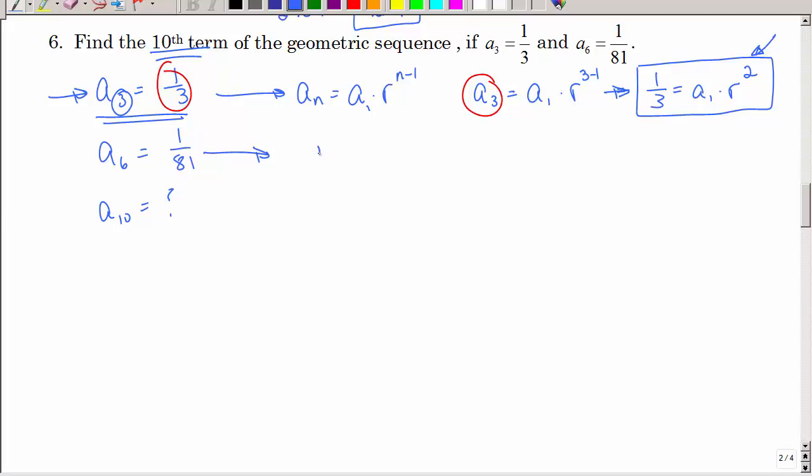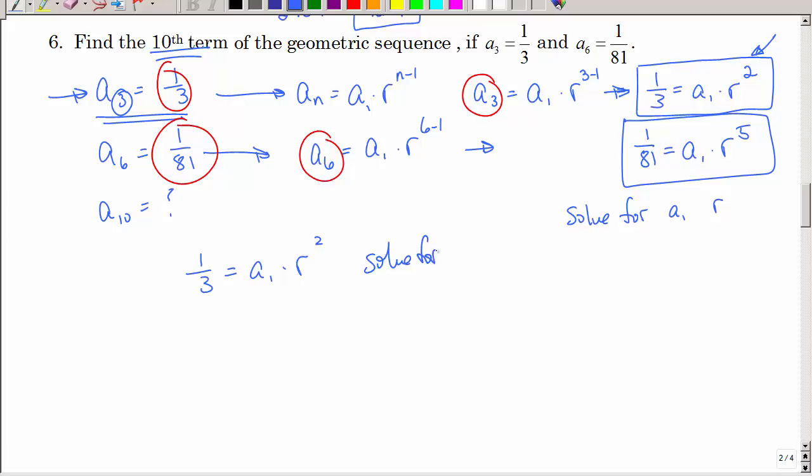Let's do this one. So, I have the sixth term is a1 times r to the sixth minus 1. But again, the sixth term is 1 over 81. So, I have 1 over 81 equals the first term times r to the fifth power. I have those two equations I need to solve for the first term and r. I can't use the elimination method by adding because of that multiplication. So, I'm going to have to use the substitution method. I'm going to solve for a1.